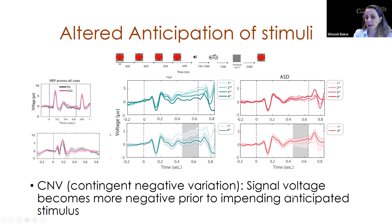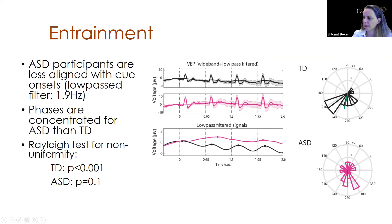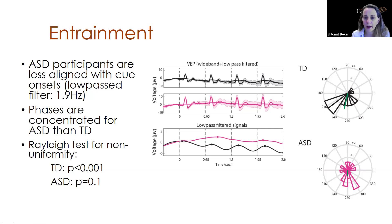This CNV indication was absent in children with ASD. We then examined how entrained their slow oscillations were to the rhythm of stimulus presentation by low-pass filtering the signal — black is the TD group and pink is the ASD group. The ASD children are not as aligned to the stimulus rhythm as the TD children, which we can also see in phase concentration. Kids with autism do not track these stimuli normally.